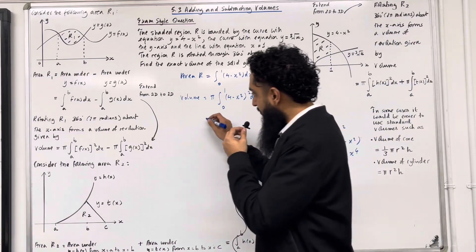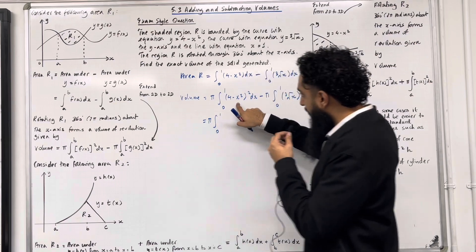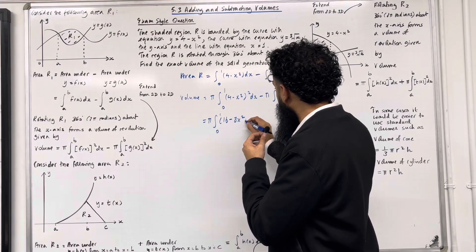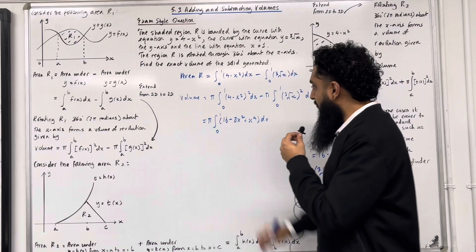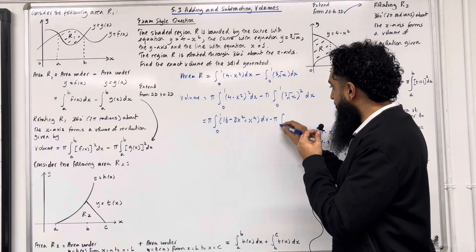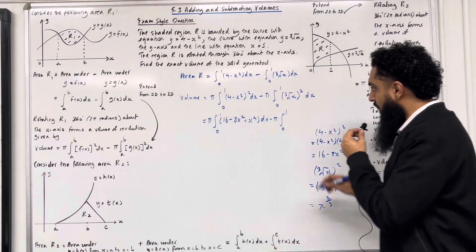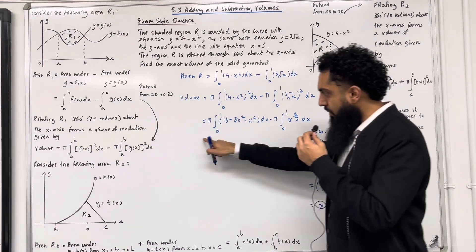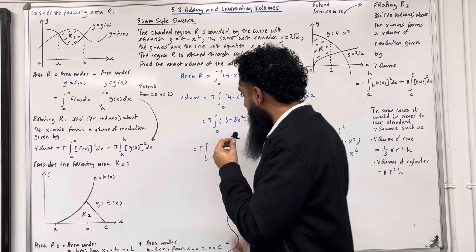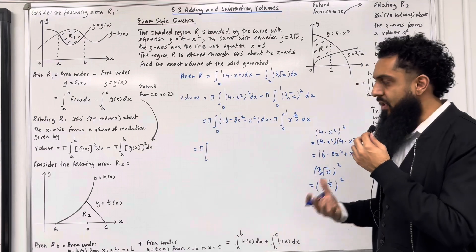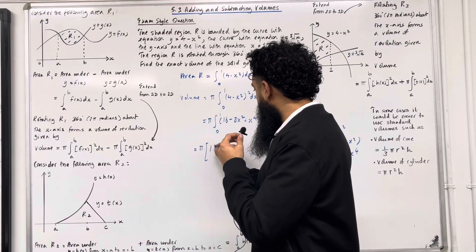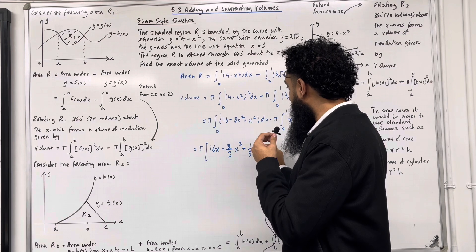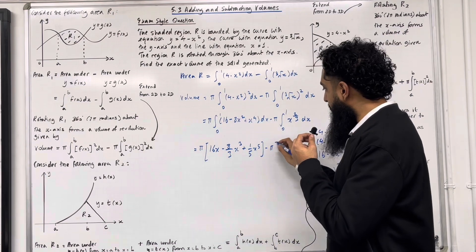So I can write down π multiplied by the integral from 0 to 1 of (16 − 8x² + x⁴) dx, minus π multiplied by the integral from 0 to 1 of x^(2/3) dx. Integrating term by term — add 1 to the power, divide by the new power — gives: 16x − (8/3)x³ + (1/5)x⁵.